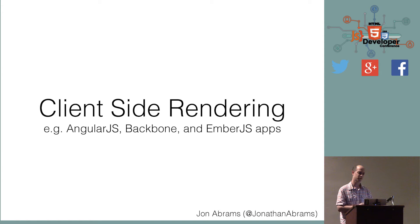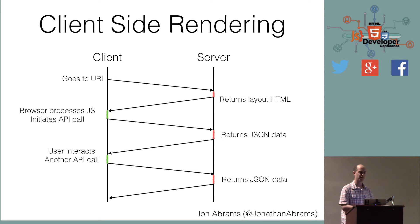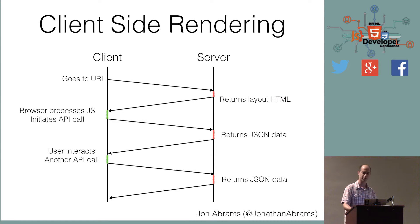With client-side rendering, the user puts a URL into the browser, the browser makes a request to the server just like before, but what happens differently is that it returns a layout HTML — there's no data necessarily in that HTML. It basically defines where the data will go eventually, sends that back to the browser, the browser reads the HTML, renders it, perhaps shows a loading icon, then runs the JavaScript that came along with it, and that JavaScript makes a follow-up API call automatically, which goes either to the same server or a different server, which responds with JSON data sent back to the browser.